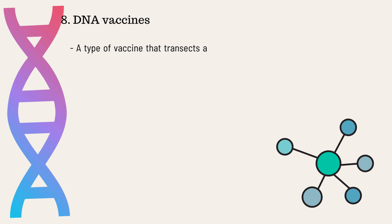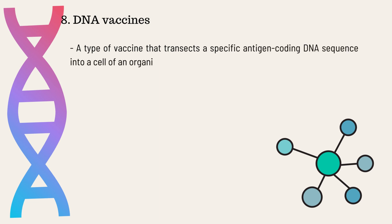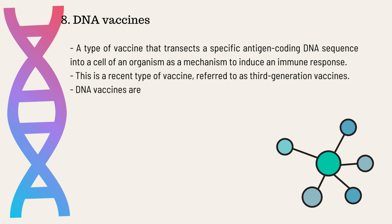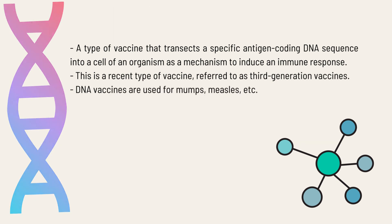The eighth type of vaccine is a DNA vaccine. It is a relatively recent type of vaccine, usually referred to as third-generation vaccines. The way it works is that it transacts a specific antigen-coding DNA sequence into a cell of an organism as a mechanism to induce an immune response. These types of vaccines are usually used to treat mumps and measles.